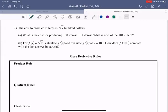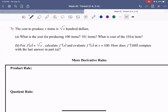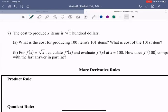In this video, we're going to look at example 7 from our notes in section 2.5. So now we're going to look at an application of derivatives in business. This problem says the cost to produce x items is the square root of x in hundreds of dollars.